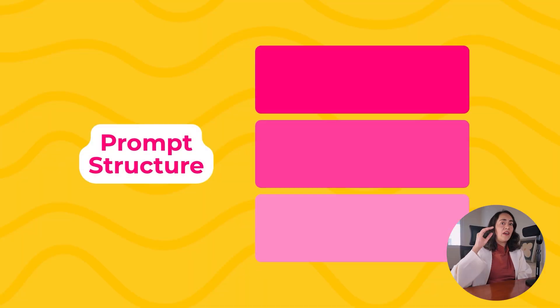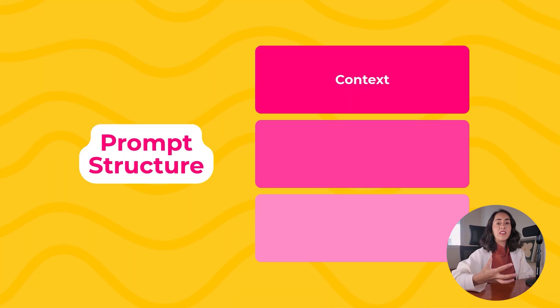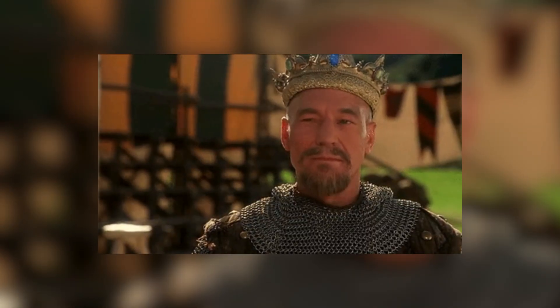Here it is. I have three different sections. In the first one, we are going to give some context — basically telling Canva what we want to create and why we want to create it. But before we jump into the example, I want to give you a tip before we start writing our prompt.